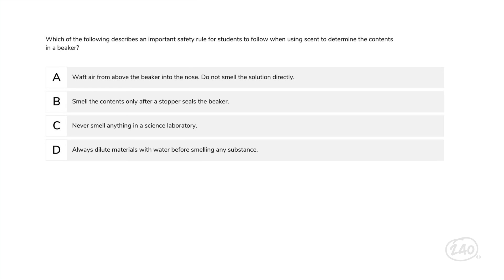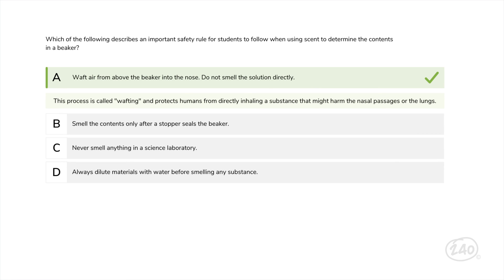Want a good tip? Use common sense in the lab. Like don't eat your lunch near chemicals and make sure you don't have sleeves dangling or long hair where they can catch fire when working with flames. But when in doubt, check the material safety data sheet for any chemicals you're working with so you are prepared if something happens. So what can you expect these questions to look like on your test? Let's start with lab safety. Which of the following describes an important safety rule for students to follow when using scent to determine the contents in a beaker? In science, unknown materials should never be smelled directly. Instead, a hand should be waved over the opening of the container, directing scent molecules toward the nose. This process is called wafting and protects humans from directly inhaling a substance that might harm the nasal passages or the lungs. Waft air from above the beaker into the nose. Do not smell the solution directly. So this is the best choice. It also works well to tell you when it's time to take out the trash.